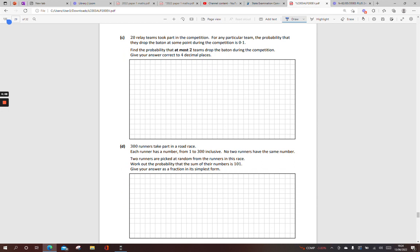20 relay teams took part of the competition. For any particular team, the probability they drop the baton is 0.1. So the probability not drop is 0.9. Find the probability that most two teams drop the baton. So this is my binomial distribution. And this is where I look at page 33 of my formula book. And I see here my binomial distribution at most two teams. So that means there could be zero teams dropping it. 0.1 to the power of 0, 0.9 to the power of 20.